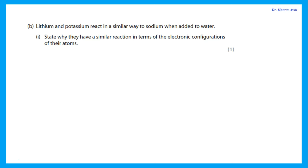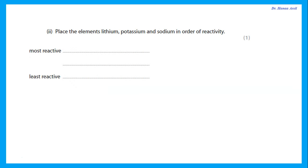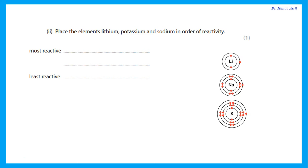Lithium and potassium react in a similar way to sodium with water. They have similar reactions in terms of electronic configurations because all Group 1 elements have the same number of electrons in their outer shell — they all have one electron in their outer shell. Place lithium, potassium, and sodium in order of reactivity. Going down Group 1, the one lower down is more reactive. So potassium is more reactive than sodium, which is more reactive than lithium.